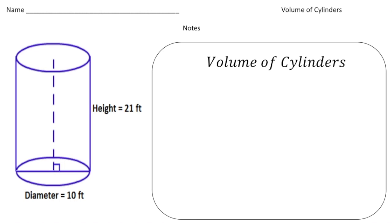How do we find the volume of a cylinder? It's done almost the same way as you find the volume of a rectangular prism. You find the area of the base and multiply it by the height.